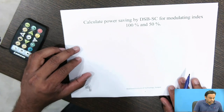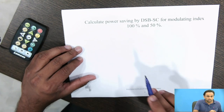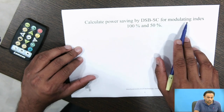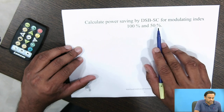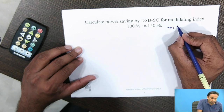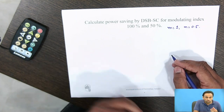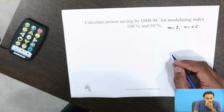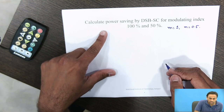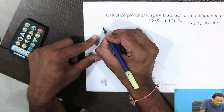In this example, we have to calculate the power saving by DSB-SC for modulating index 100% and 50%, that is for m = 1 and m = 0.5. These are the two cases we need to calculate the power saving for.